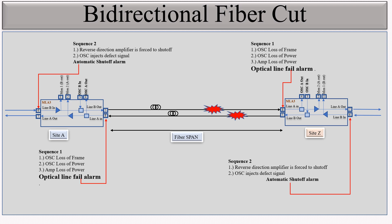So this is all about how the alarms appear, on which amplifier the alarm appears, and on which port the alarm shows. This covers the fiber cut scenarios in which the optical line fail alarm will appear. Thanks for watching.